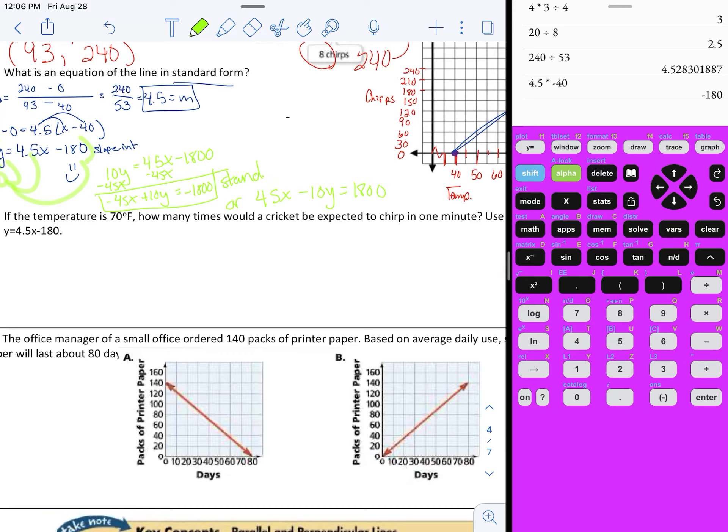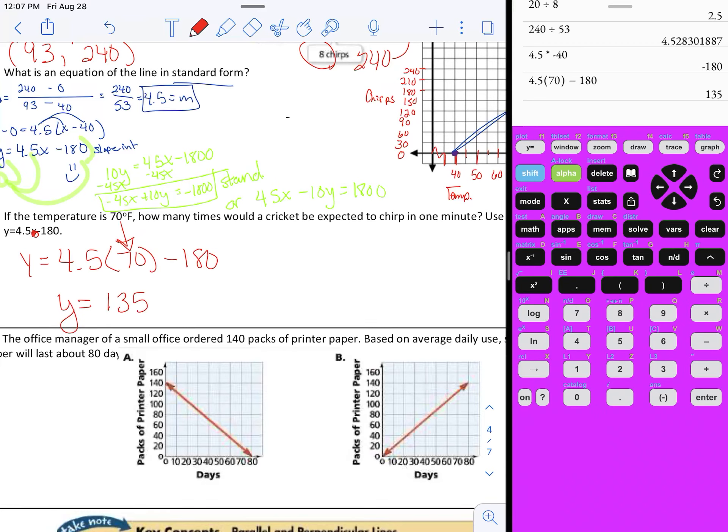Now what we can do is take that equation based off those two points and predict something we don't know. Let's say it's 70 degrees outside and we're like, hmm I wonder how many times a cricket's gonna chirp. That would be y equals 4.5, plug 70 in for x because x was temperature. We take our handy dandy calculator, and it's 135. So we say y equals 135, and this is how many times it would chirp in one minute at 70 degrees.